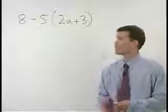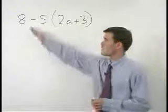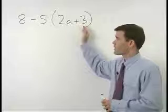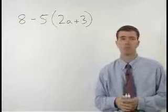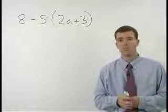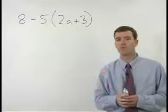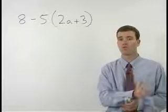When you first take a look at this problem, it's tempting to want to subtract 8 minus 5 to get 3, then distribute the 3 through your parenthesis. You wouldn't want to subtract however before you distribute because the distributive property is a form of multiplication and remember from your order of operations that multiplication comes before subtraction.